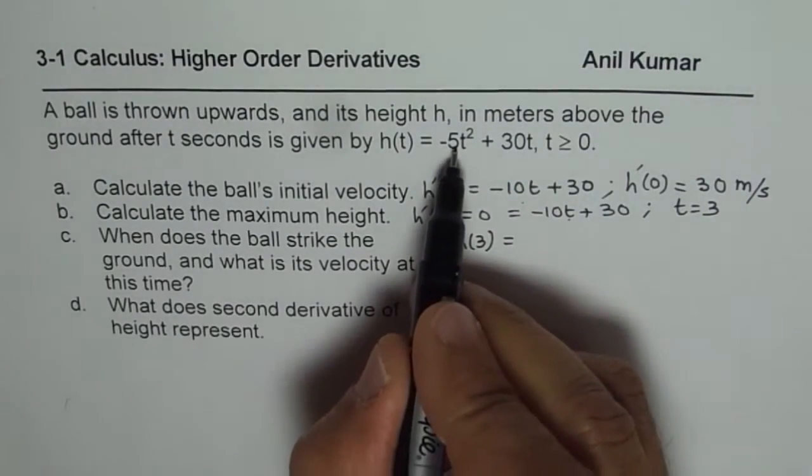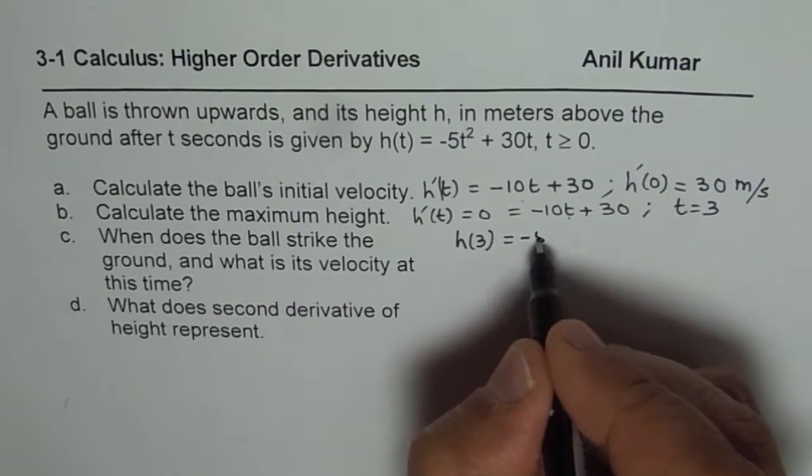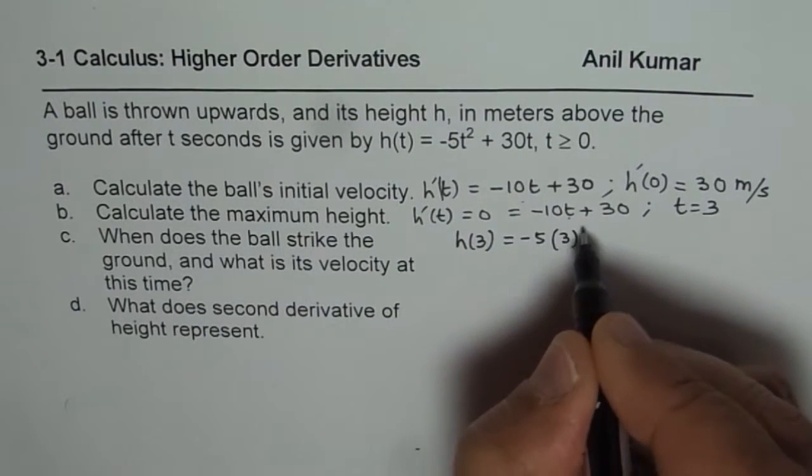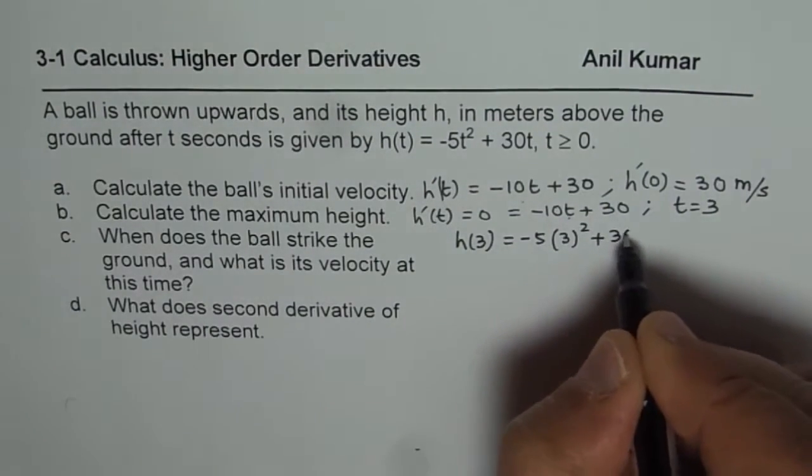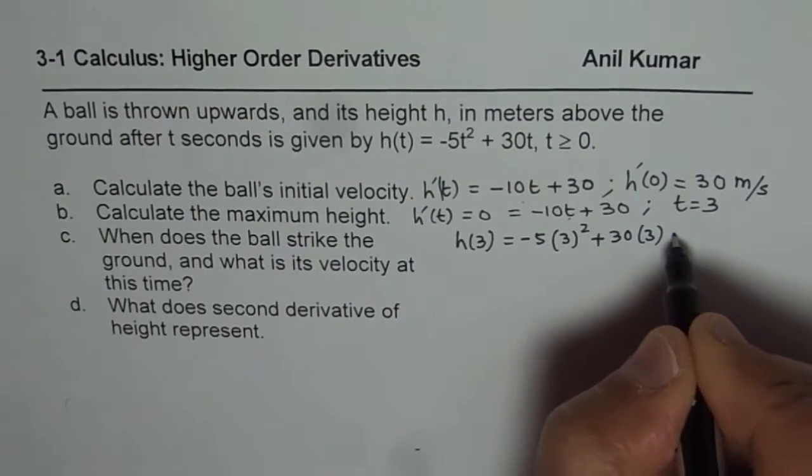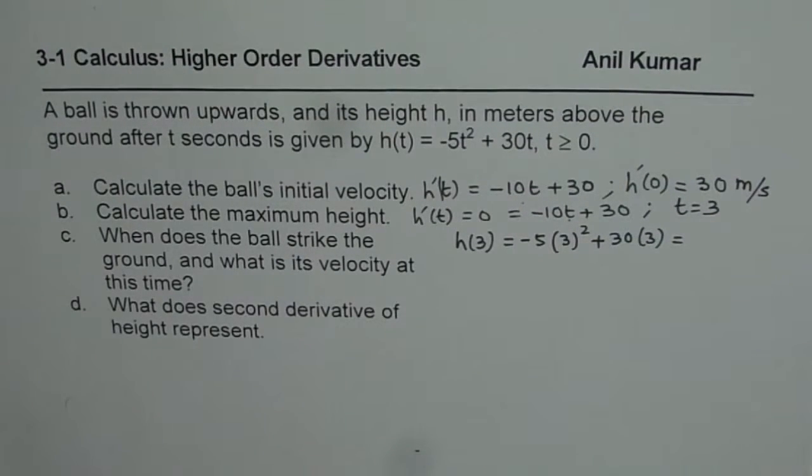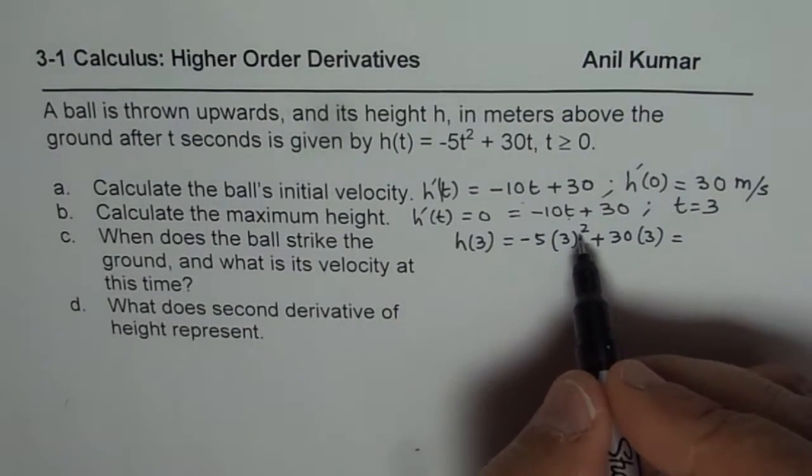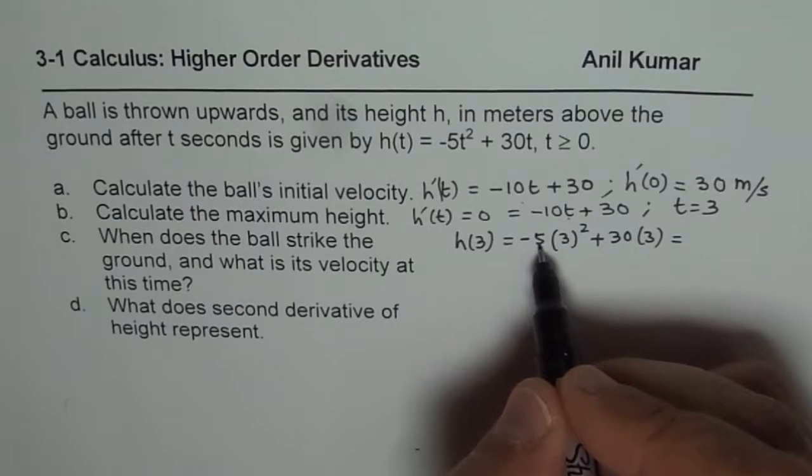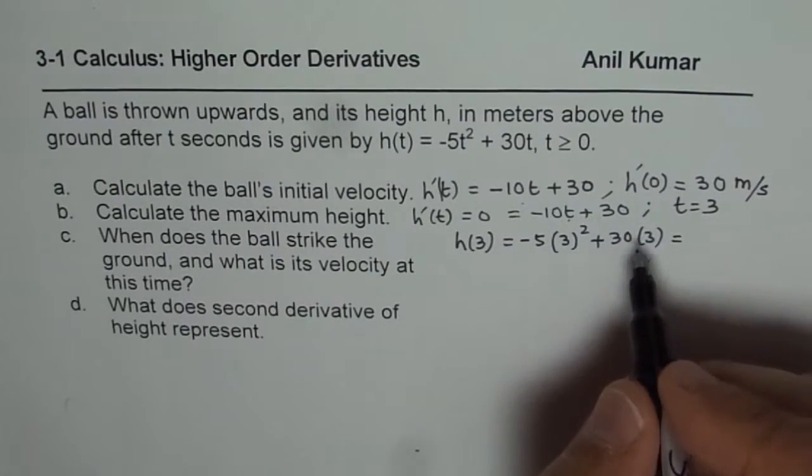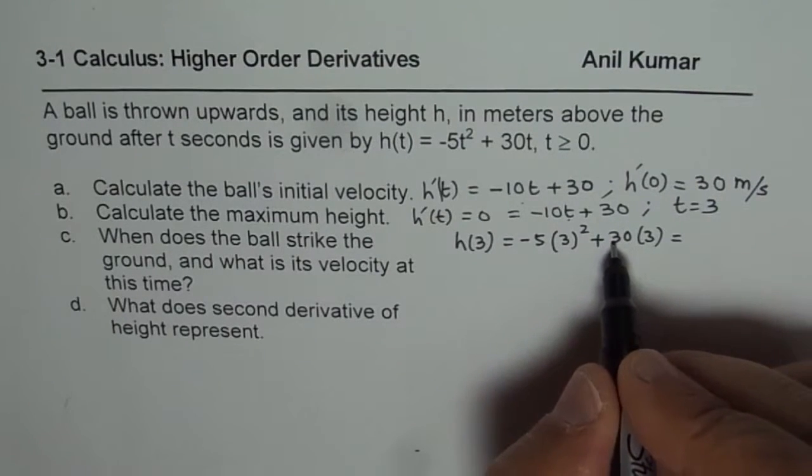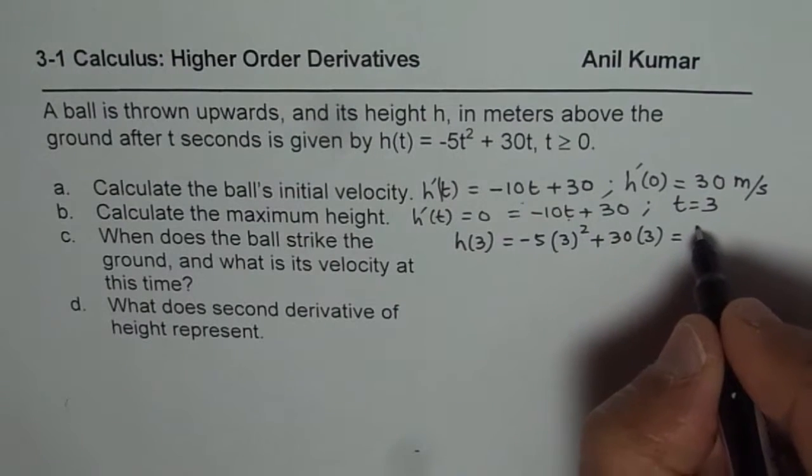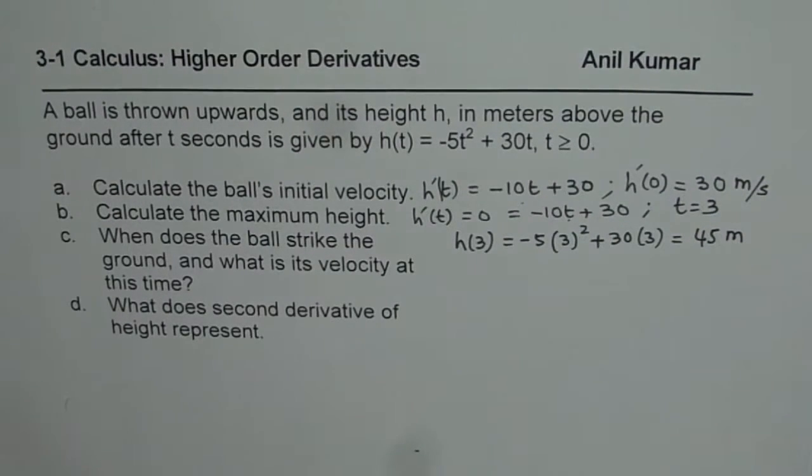Now we need to find maximum height. That means height when time was 3. Substitute 3 in height formula. So we get -5(3)² + 30(3). You can use calculator to answer your question. It is 9 times 5 is 45. You have to take away 45 from 3 times 30 which is 90. So we do get 45 units or meters. So that becomes your maximum height.